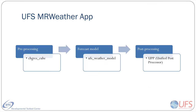This app consists of three components: pre-processing using Changer as Cube, the forecast using the UFS weather model, and post-processing using the Unified Post Processor, or UPP.